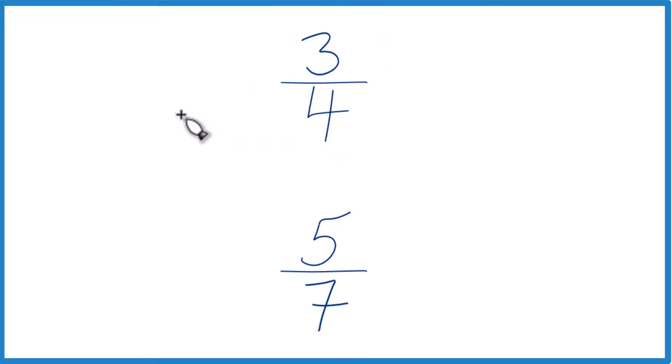So to do that, we could just divide 3 by 4 in a calculator, get a decimal, divide 5 by 7, get a decimal, and compare those. Whichever one is larger, whichever decimal is larger, that's the larger fraction.